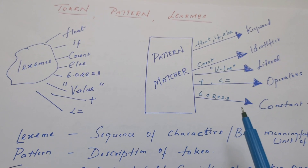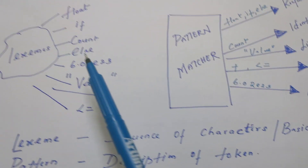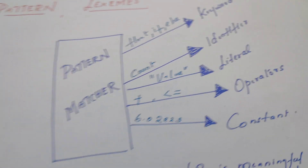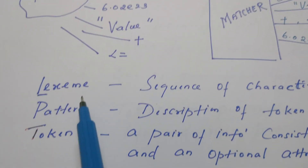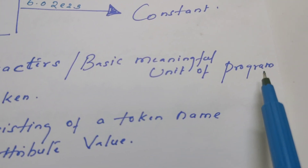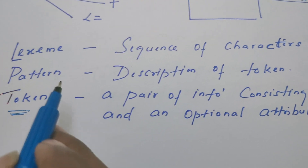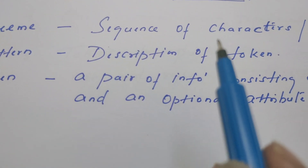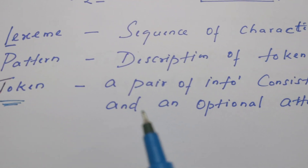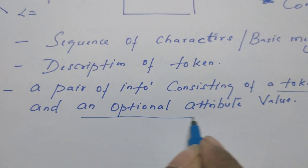This is the task of the lexical analyzer — it reads lexeme by lexeme and recognizes what token each lexeme is. A lexeme is a sequence of characters; it is a basic meaningful unit of a program. A pattern is a description of a token — it describes how a keyword must be, how an identifier must be, how a literal must be. A token is a pair of information consisting of a token name and an optional attribute value.